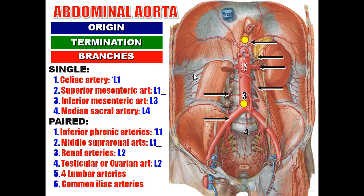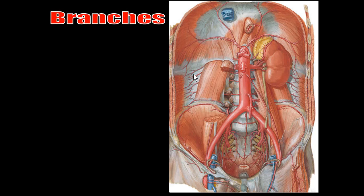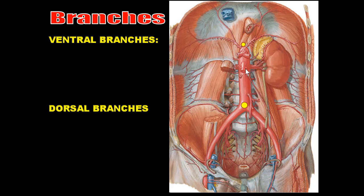The second way of organization: branches are classified as ventral branches from the anterior surface, lateral branches from the lateral surface, and dorsal branches from the back.